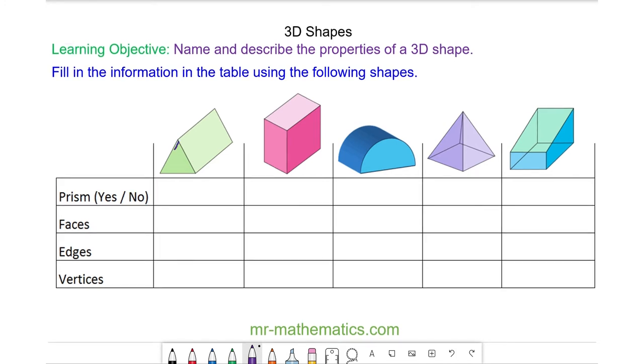We begin with this triangular prism and it is a prism because you can see the cross section, which is this face here, is repeated throughout the entire shape. So imagine if you were to take a slice along any of these lines you will still have the same cross section facing you at the front. So yes, this shape is a prism.